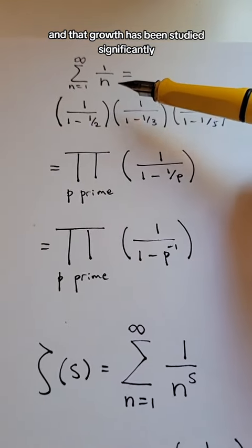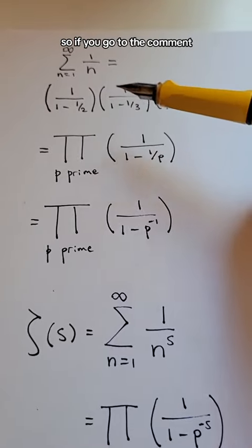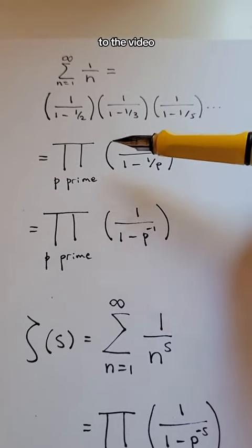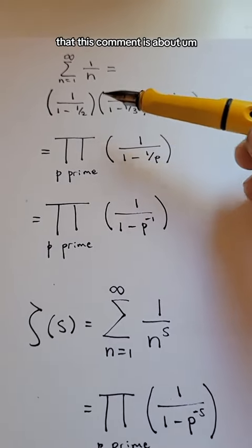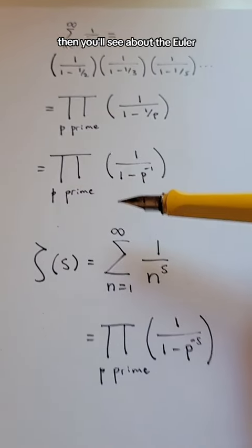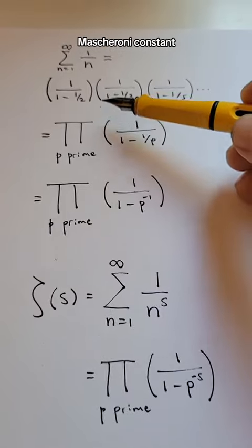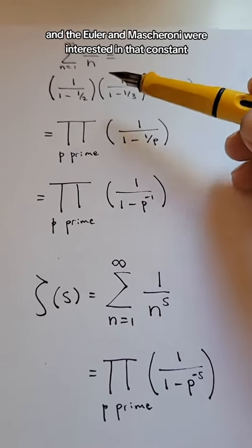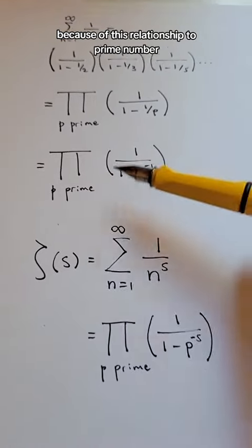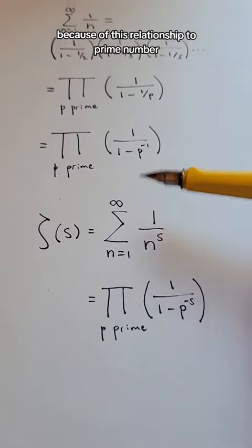And that growth has been studied significantly. So if you go to the comment, to the video that this comment is about, then you'll see about the Euler-Mascheroni constant, and Euler and Mascheroni were interested in that constant because of this relationship to prime numbers.